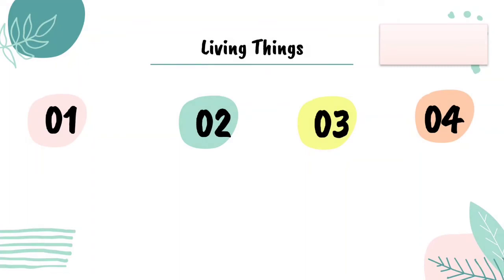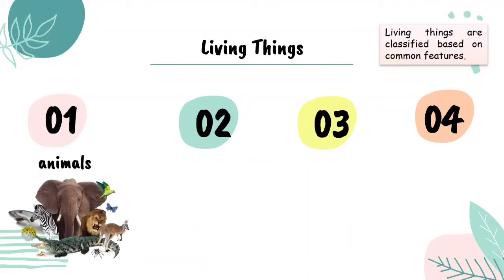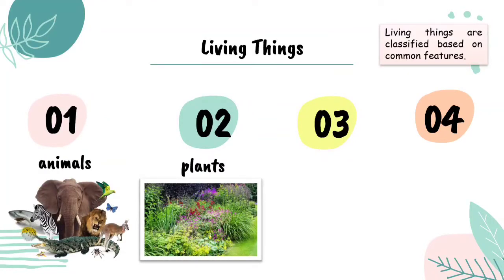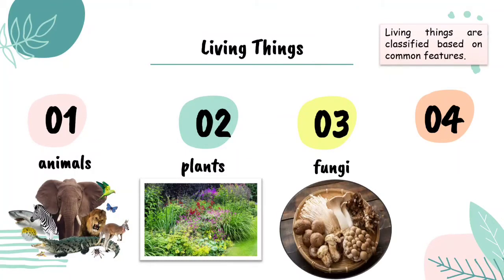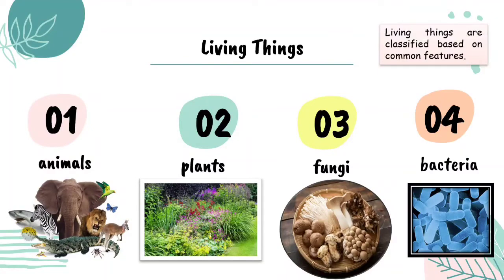We classify living things by grouping them based on common features. The first group is animals, the second is plants, the third is fungi — have you ever seen or eaten fungi? Your mom might cook it at home. And the last group is bacteria.